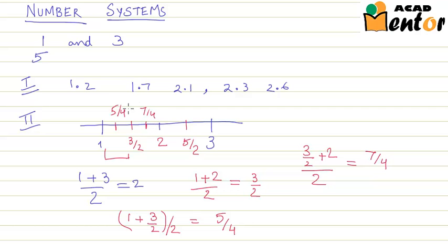So we have found 5 rational numbers between 1 and 3. You can further find more numbers by finding midpoints of all these numbers.